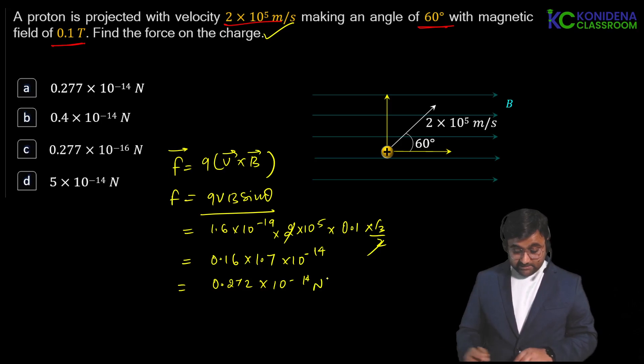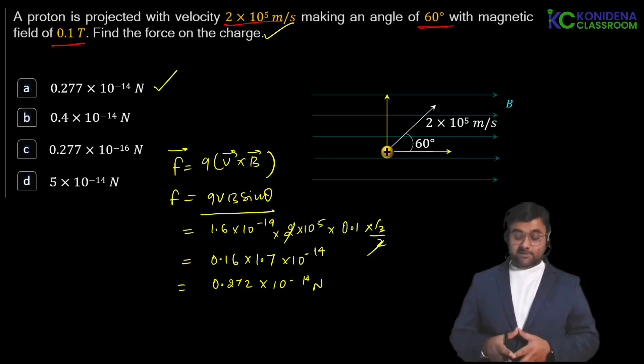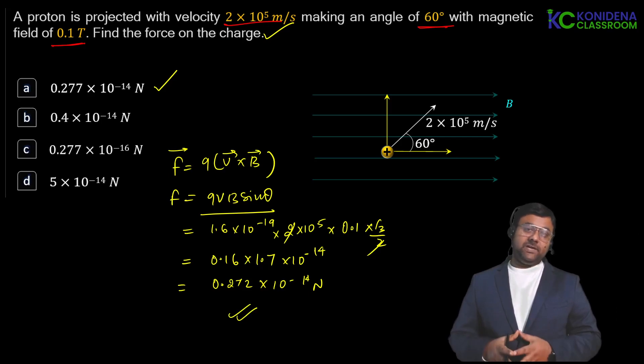So the answer should be the first option is true. That is very close to us because root 3 value we have taken here is 1.7 and the real value is 1.732. The answer is going to be 0.27 cross 10 to the power minus 14 Newton. That's the force we got. This was an easy question. I hope it is clear to you guys. Thank you.